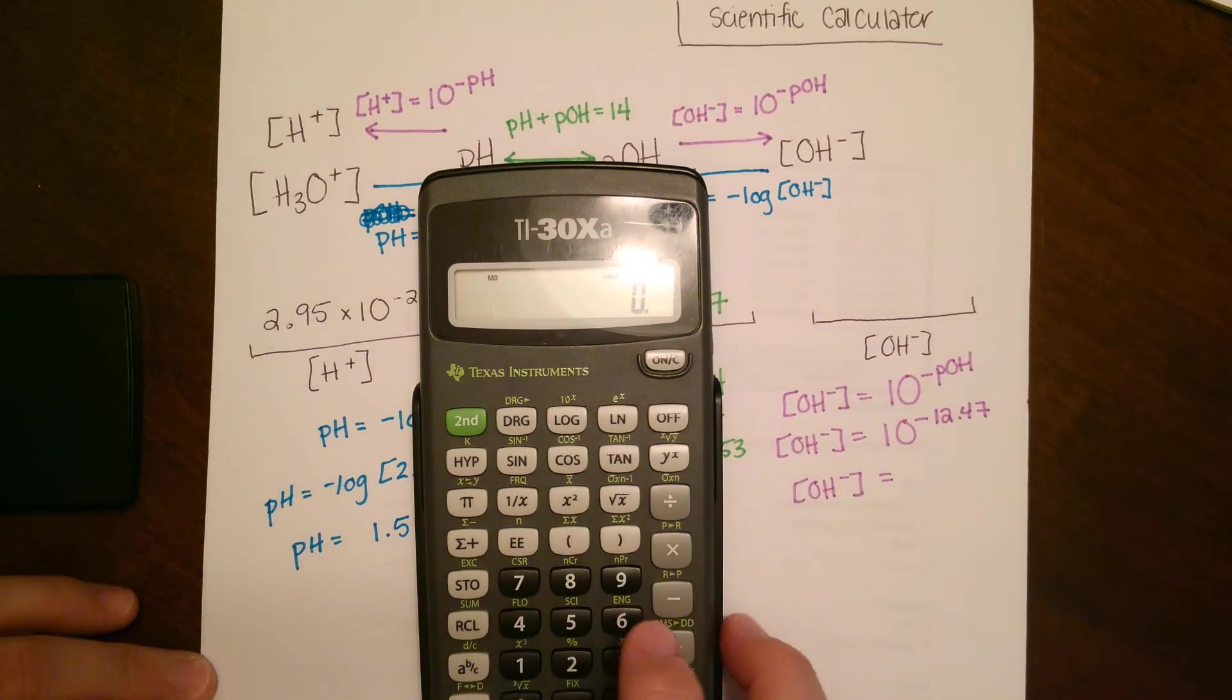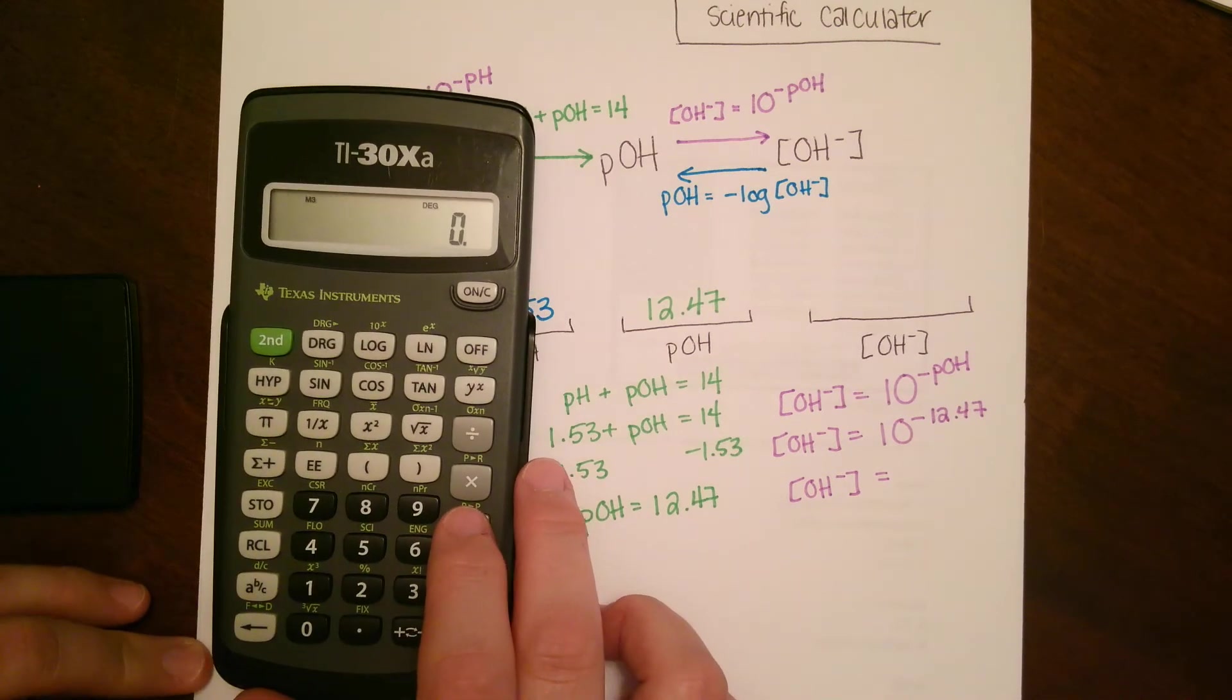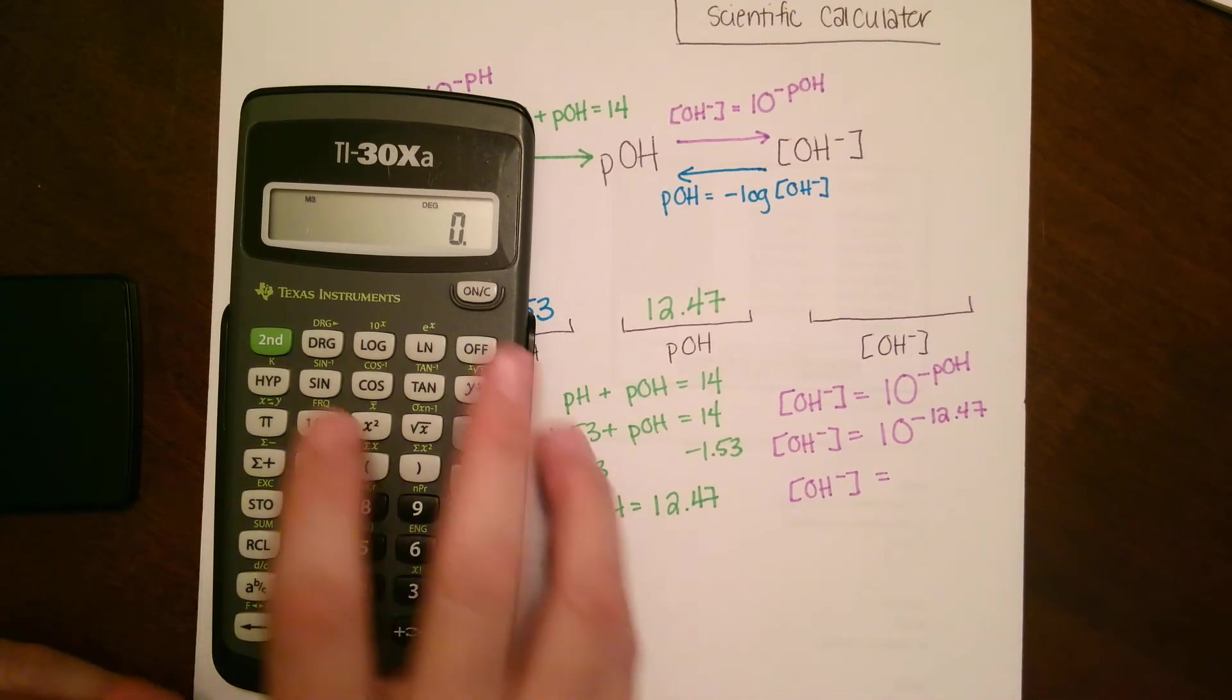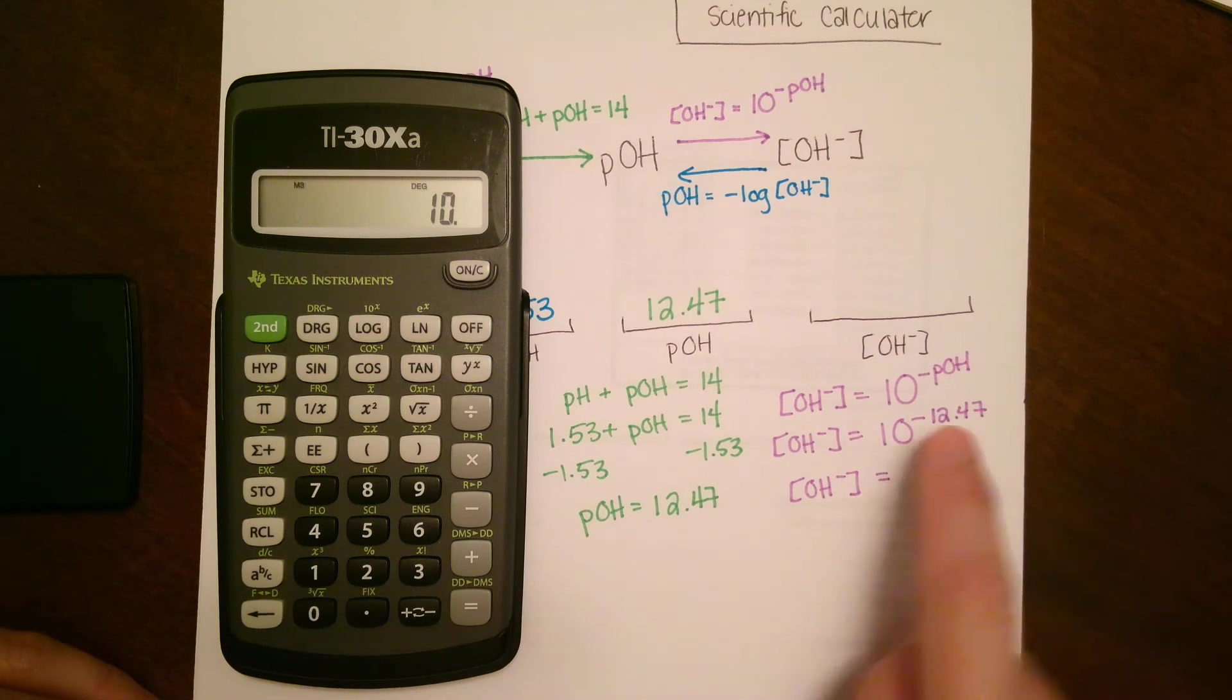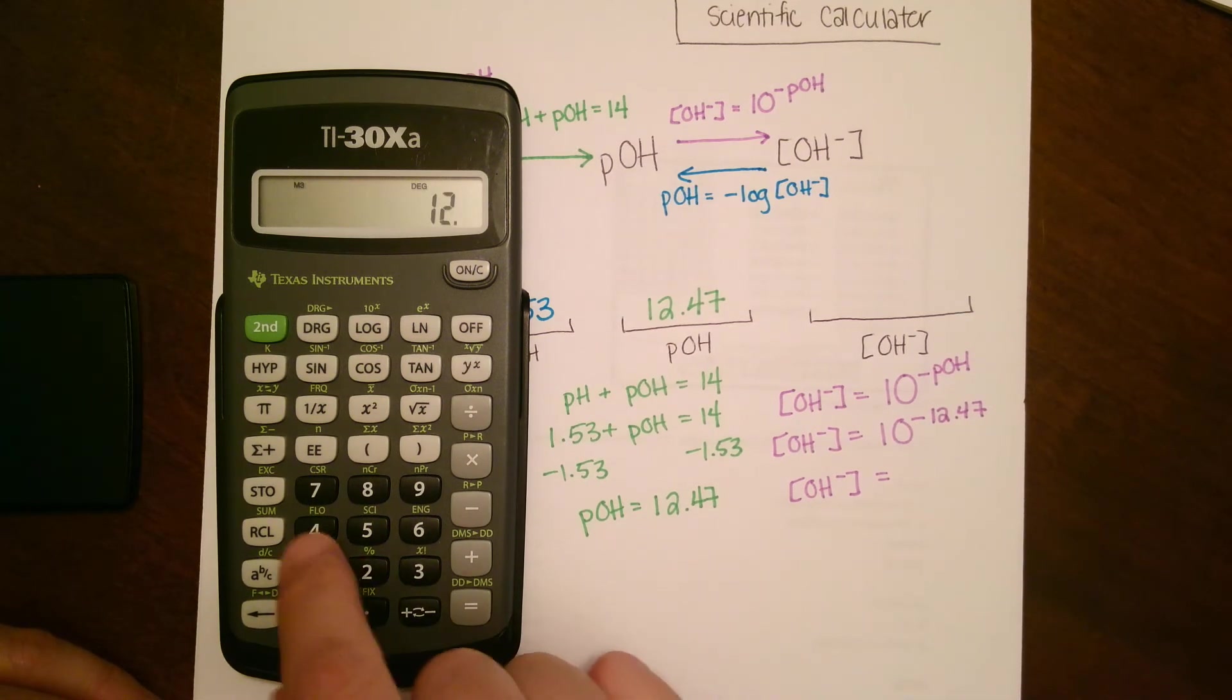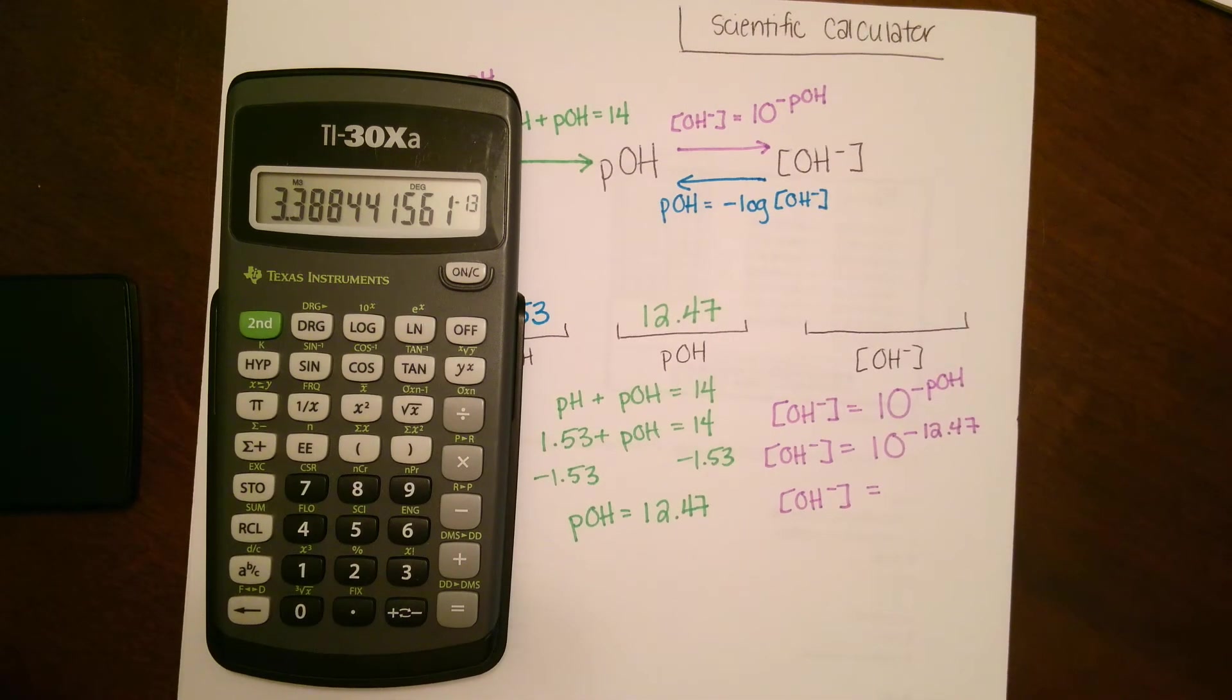For our calculator with this one, I always like to discourage using the to the power button, but for this one we're going to be using it for sure. We're going to say 10 to the power of 12.47 negative. Make sure you press that negative after, hit enter, and we will get it.